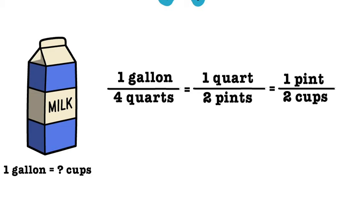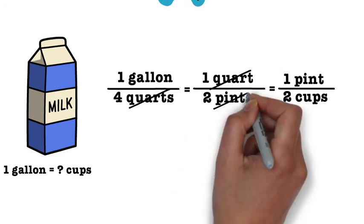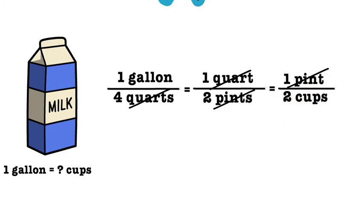Notice that quarts and pints are diagonal from each other. We can cross-cancel both quarts and pints, but only the words, not the numbers because they are already in lowest terms.